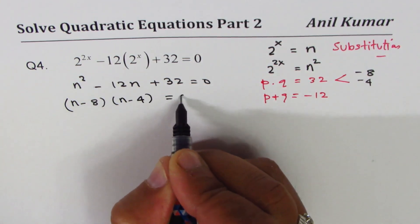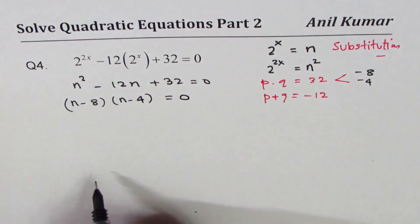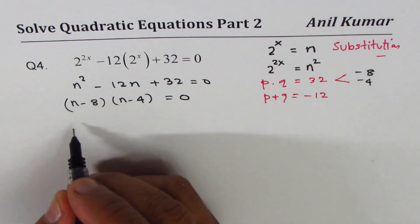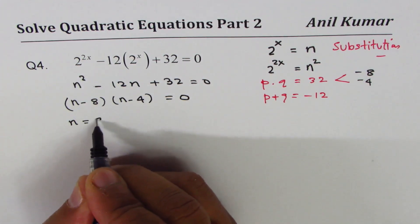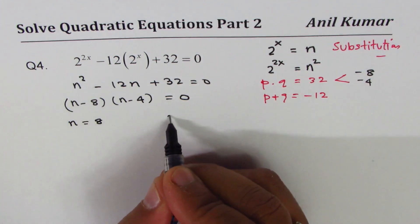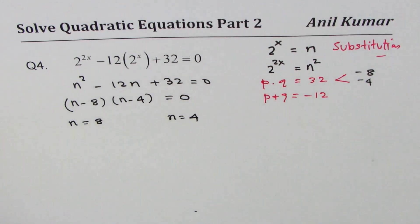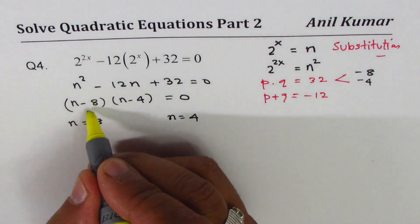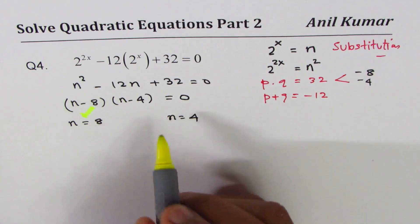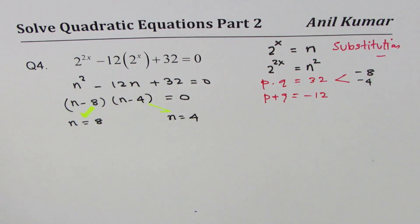That gives us two values for n. So we'll do n equals to 8 and n equals to 4. Now n minus 8 is 0 when n is 8, n minus 4 is 0 when n is 4. The idea is to find what x is, not just n.